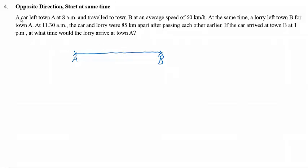In this question, a car left Town A at 8 AM. That means the car left A and traveled towards Town B — the car is going to the right and the speed of the car is 60 km per hour. At the same time, the lorry left Town B and traveled towards Town A. That means the lorry is moving from right to left.